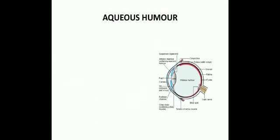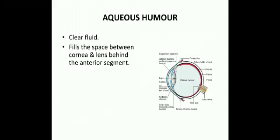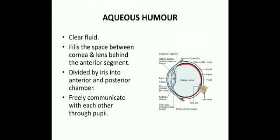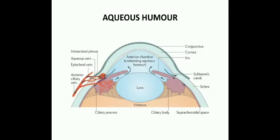Aqueous humor is a clear fluid that fills the space between the cornea and the lens. The iris divides the anterior segment into the anterior and posterior chambers, and aqueous humor freely communicates between them through the pupil. It is secreted into the posterior chamber from the capillaries in the ciliary processes, passes into the anterior chamber through the pupil, and drains into the anterior ciliary veins through the spaces of the iridocorneal angle and the canal of Schlemm.